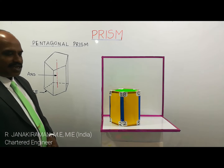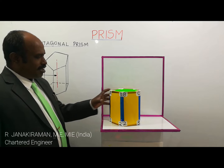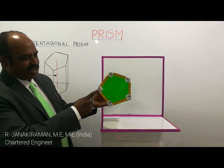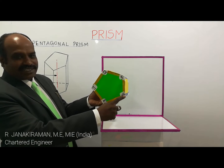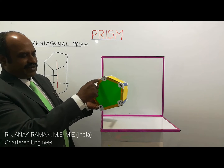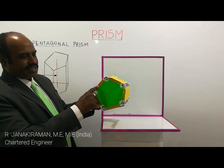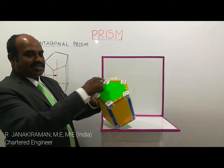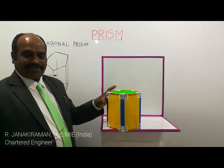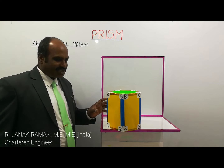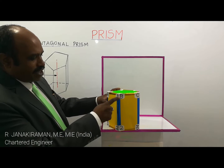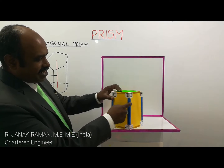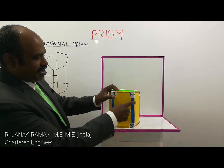The next solid object is called a pentagonal prism. Looking at the base of the prism, instead of having a triangle, this has 5 sides on its base. The top surface is also having 5 sides. Then the prism is called a pentagonal prism — pentagon means having 5 sides. The blue color edges are called vertical edges; there are 5 vertical edges in the pentagonal prism.